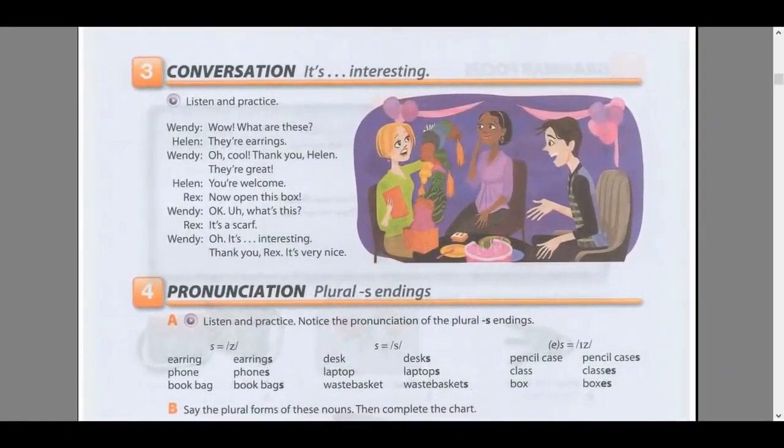Page 9, Exercise 3, Conversation: It's interesting. Listen and practice. Wow, what are these? They're earrings. Oh, cool. Thank you, Helen. They're great. You're welcome. Now open this box. Okay. Um, what's this? It's a scarf. Oh, it's interesting. Thank you, Rex. It's very nice.